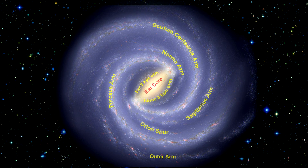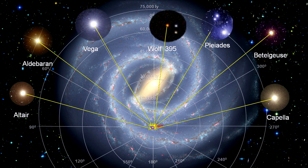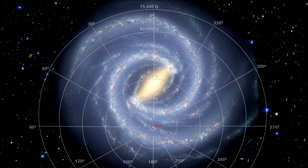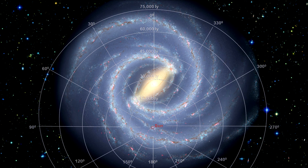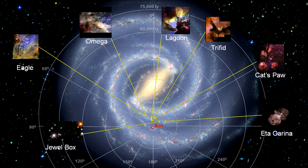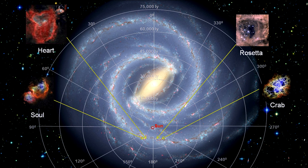If we lay a grid over the galaxy, we can locate stars, nebulae, and H2 regions. All local neighborhood stars fit within the red circle marking our solar system: stars like Wolf 359, Altair, Vega, Polaris, Capella, Aldebaran, the Pleiades, and Betelgeuse — all in the Orion Spur, along with the Orion, Horsehead, Cone, Witch's Head, Veil, and many other nebulae. In Sagittarius, we see the Jewel-Box star cluster and the Trifid, Omega, Lagoon, Eagle, and Cat's Paw nebulae. In Perseus, we see the Rosette, Heart and Soul nebulae, as well as the Crab Supernova.